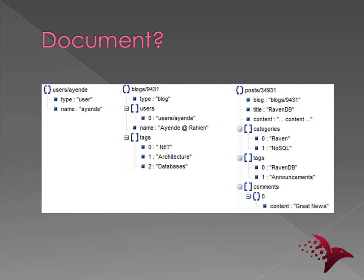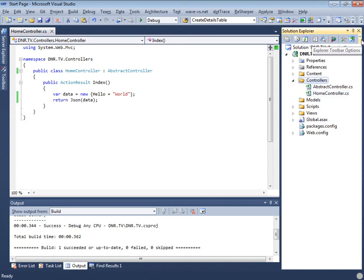This is a set of documents. Documents can be flat, such as the user's example — just a property bag. They can be structured, and they can be complex objects. You can see that in the posts we have a collection of complex objects. Let's do something more fun. Can you give me some sample domain, something we can work on right here and now? Let's talk music — albums and artists.